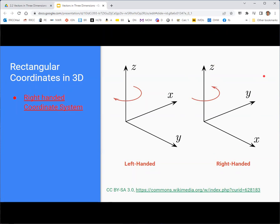The right-handed coordinate system is the dominant coordinate system in the United States, though some countries may use a left-handed system. We will always use the right-handed system in this class.